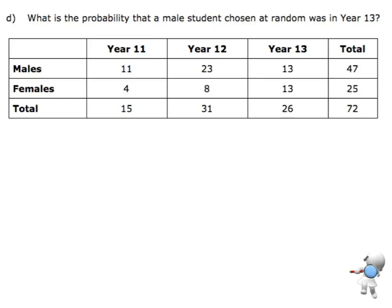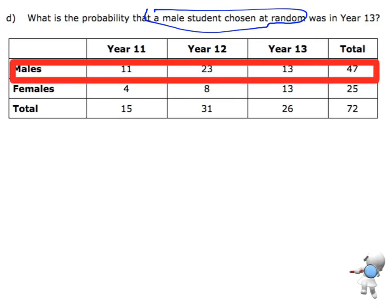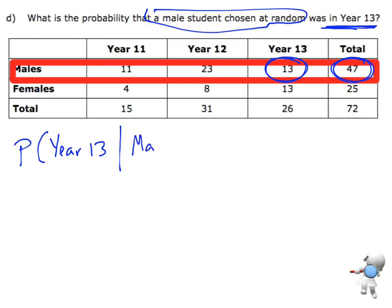What's the probability that a male student chosen at random was in Year 13? This tells us I'm not looking at everyone — I'm only interested in the male students. There are 13 males who are in Year 13 out of the 47 males in total. So this is conditional probability: the chance of being in Year 13 given that they are male is 13 out of 47.